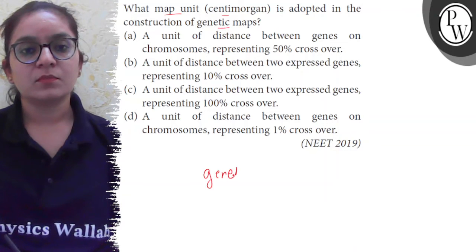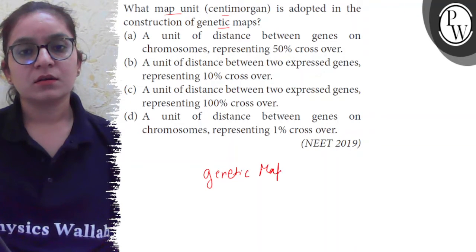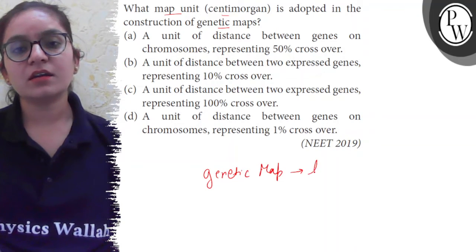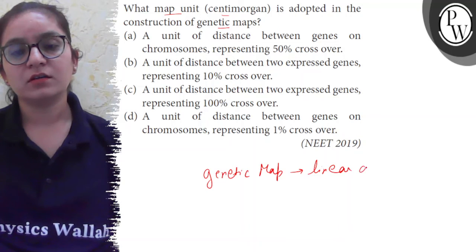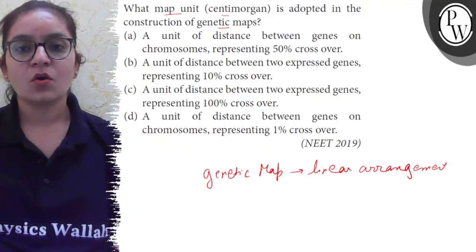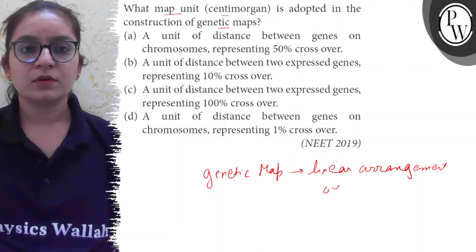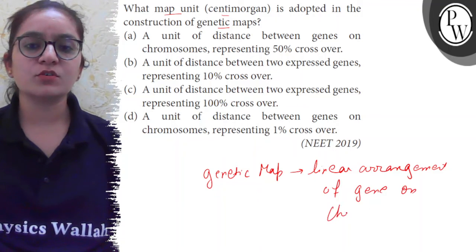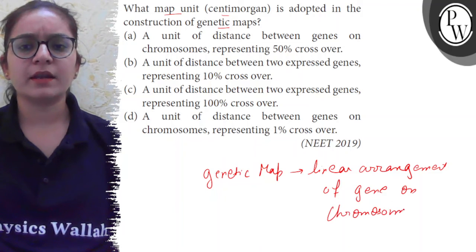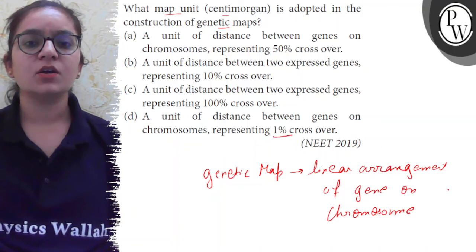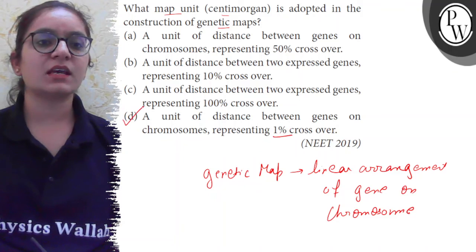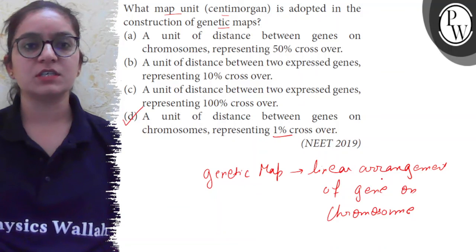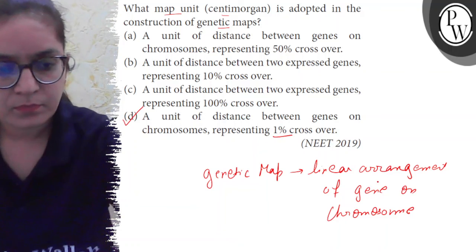A map unit centimorgan is adopted for the construction of a genetic map. A genetic map is the linear arrangement of genes on a chromosome, showing 1% crossover. So the correct answer here is option D. Thank you.